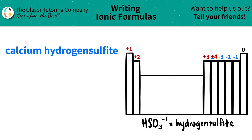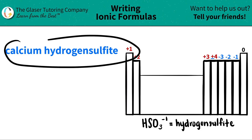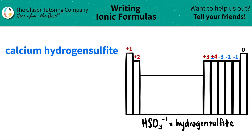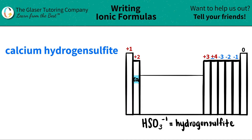Today we are going to be writing the formula for the ionic compound calcium hydrogen sulfite. Let's work from left to right. The first thing I see is calcium, so I'm going to scan my periodic table to see where calcium is. Calcium is in group two, represented by Ca. All group two elements are alkaline earth metals and they all have a plus two charge, so calcium is going to be plus two — it's going to lose two electrons.